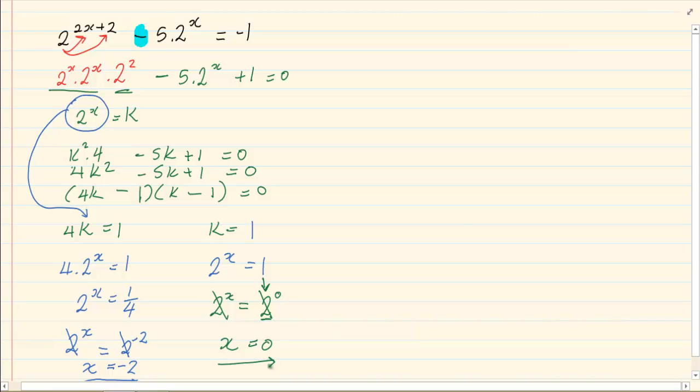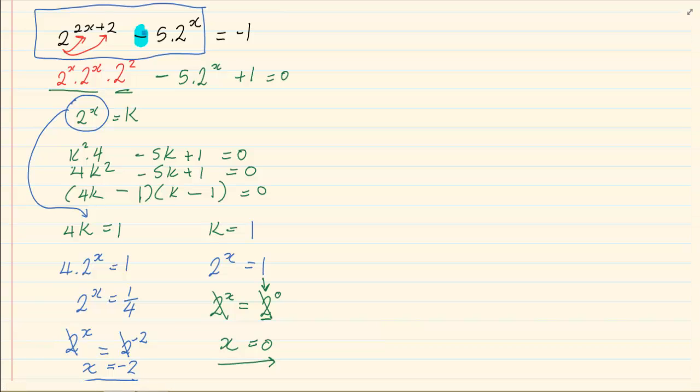When you are getting these sums, they don't always come in an equation form. Sometimes they would simply give you this part to simplify. As long as you apply the rules where plus or minus means I have to separate and then factorize, you will be okay. The general rule for plus and minus when it comes to exponents is make sure that they are in prime numbers.